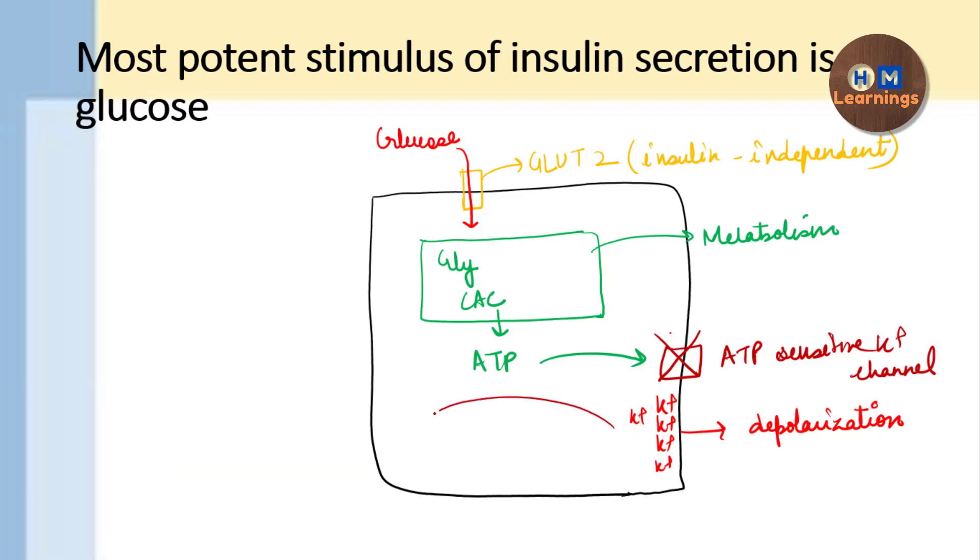This will lead to opening of a voltage-dependent calcium channel and there will be calcium influx. Now what will happen because of this calcium influx? Already there are vesicles which contain the insulin are present in the beta cell of the pancreas, and this calcium will trigger the exocytosis of these insulin in the circulation.